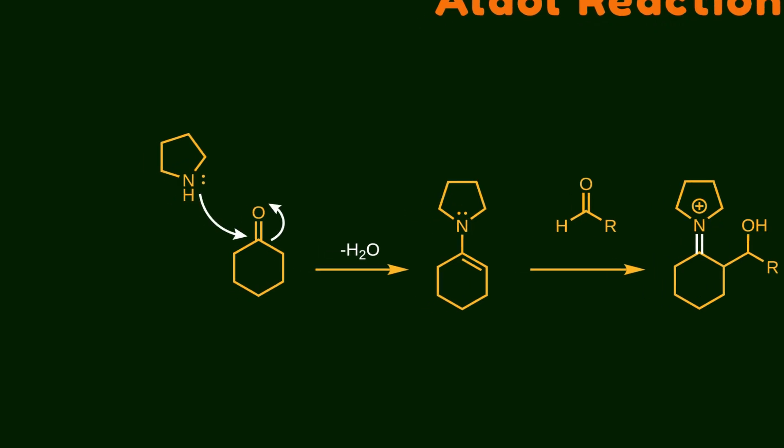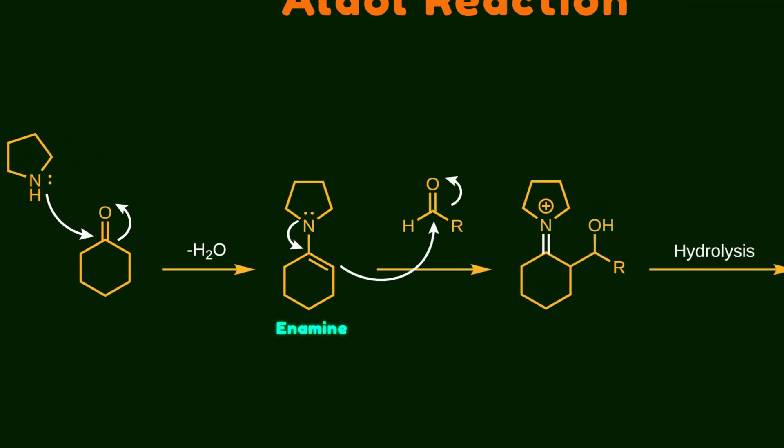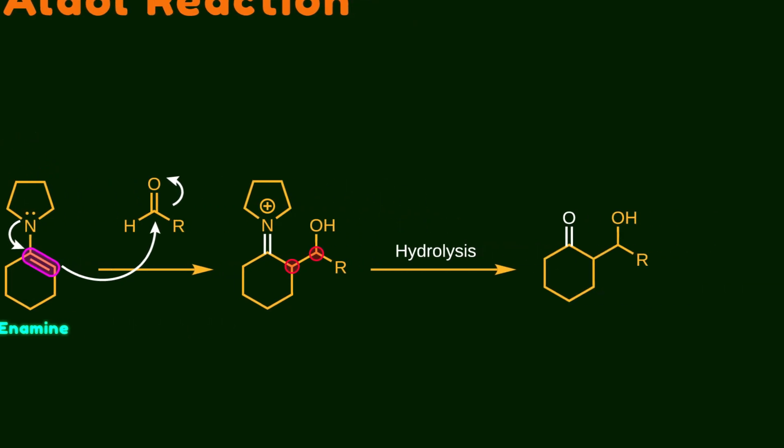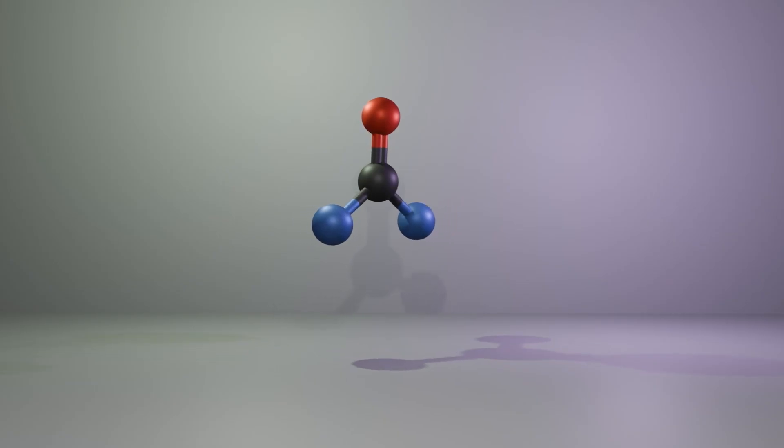The amine attacks the enolizable ketone or aldehyde to form an enamine. Now this double bond becomes activated due to the nitrogen atom. The goal is for this double bond to attack another carbonyl group forming a valuable carbon-carbon bond. After hydrolysis, the carbonyl group comes back in the final compound. Now here's an important question: which face of the carbonyl group does the nucleophile attack?